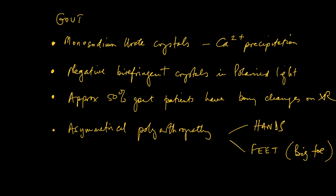Approximately 50% of patients with gout will have bony changes on x-ray. Essentially gout is an asymmetrical polyarthropathy, affecting mainly the hands and the feet, and classically the big toe, but can in theory affect any joint.